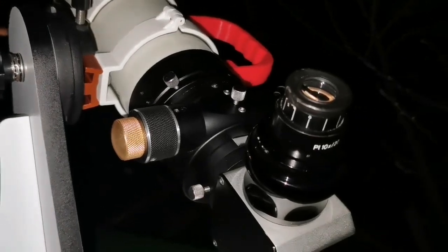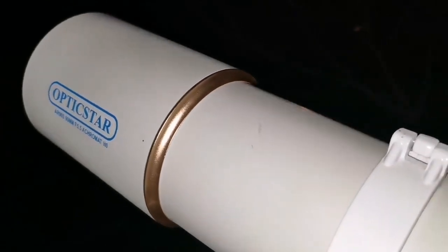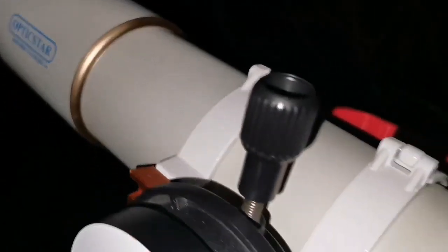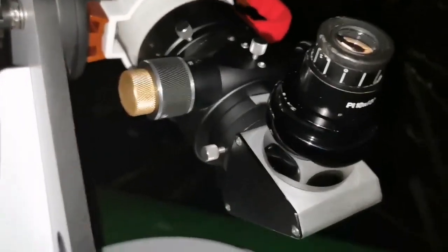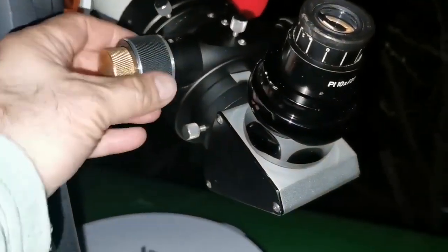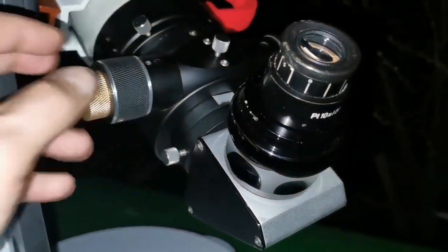I'm observing with this Optic Star AR-9TS, 90mm F 5.5 telescope. I've turned it upside down but I found it easier to actually work this side, with the fine tuning of the focus.